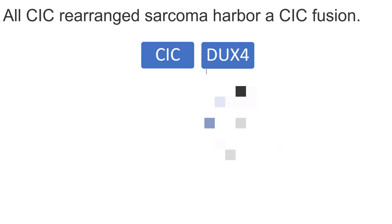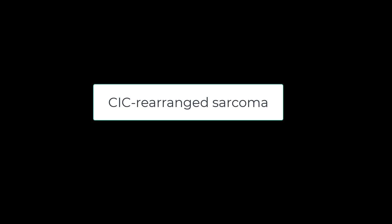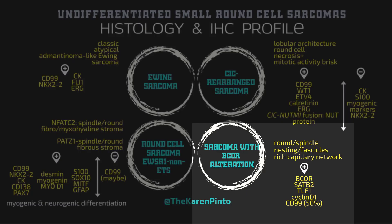Just one word about the fusion: one of the partners is always CIC, and the other in 95% of cases is DUX4, though there are other alternate partners in a small proportion of cases. And next up is the sarcoma with BCOR alteration.